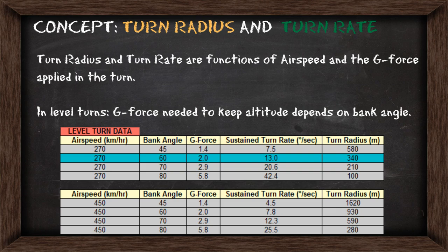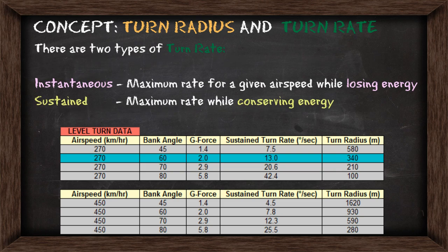In the highlighted example, with a bank angle of 60 degrees, you're going to need to maintain 2 Gs of force to stay in the level turn. This will give you a turn rate of 13 degrees a second with a radius of 340 metres at an airspeed of 270 km/h. There are two types of turn rate: instantaneous, which is the maximum rate for a given airspeed while losing energy, and sustained turn rate, which is the maximum rate while conserving energy.